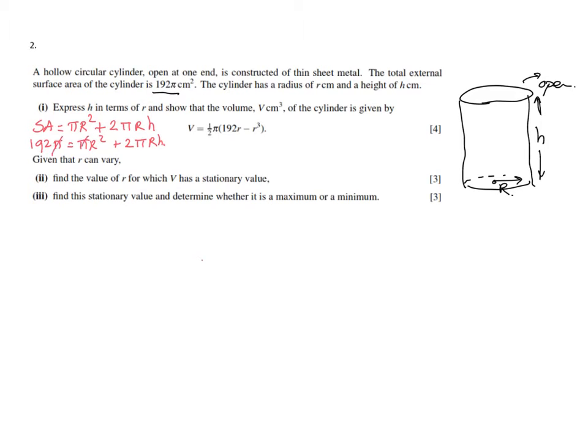First we can divide everything by π to make life easier. Then rearranging, 192 - r² = 2rh. We divide everything by 2r, so h is going to be (192 - r²)/(2r).